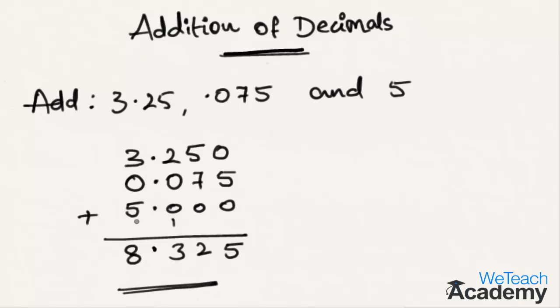One thing when adding or subtracting decimal numbers you have to remember is the position of the decimal point must be in the same line. Hope you understood the basics of adding decimals. Do like and subscribe to WeTeachAcademy.com. Thanks for watching, have a nice day.